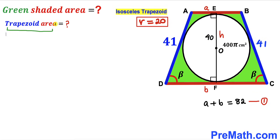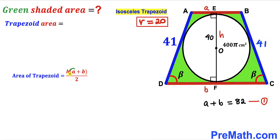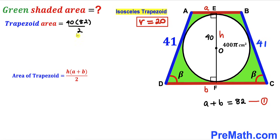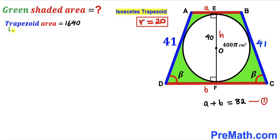Applying the trapezoid area formula: Area = h × (a + b) / 2 = 40 × 82 / 2 = 1640 cm². The trapezoid area is 1640 cm².